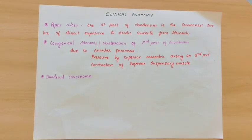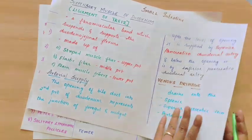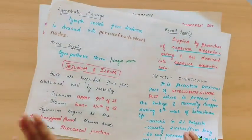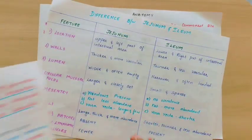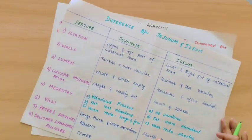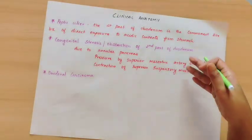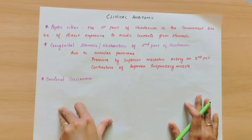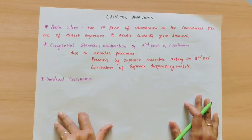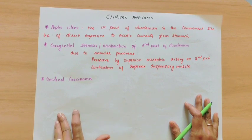In this video, we covered: the suspensory muscle of the duodenum, arterial supply, venous drainage, lymphatic drainage, nerve supply, blood supply of the jejunum and ileum, Meckel's Diverticulum, differences between jejunum and ileum, special features of the small intestine, and clinical anatomy. Thank you for watching. If you have any doubts or suggestions, please let me know in the comment section below. If you like my work, please like, share, comment, and subscribe. Thank you.